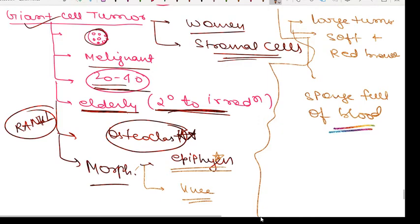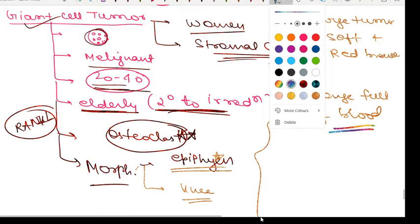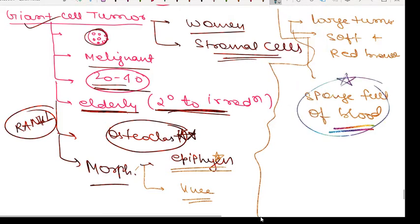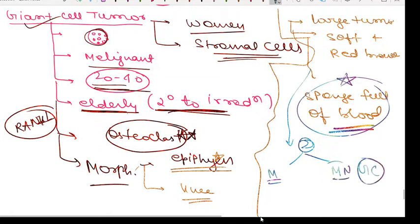An important gross feature is that numerous hemorrhagic areas give an appearance of sponge full of blood. In microscopy, two types of cells are found: mononuclear cells and multinucleated giant cells. Importantly, the diagnosis of malignancy depends upon the morphology of mononuclear cells rather than that of the multinucleated giant cells.